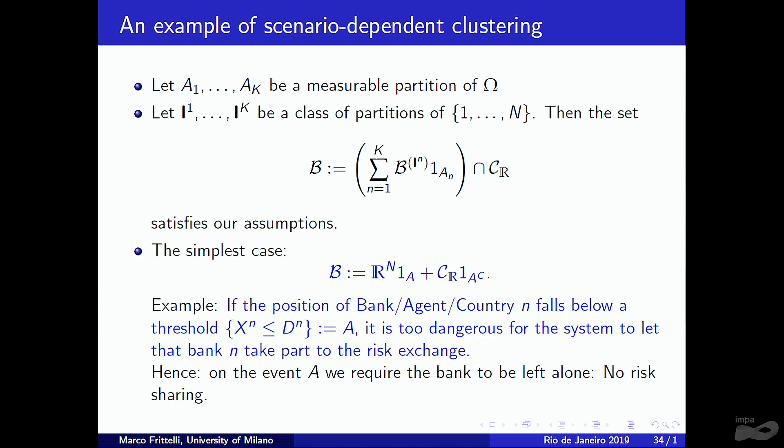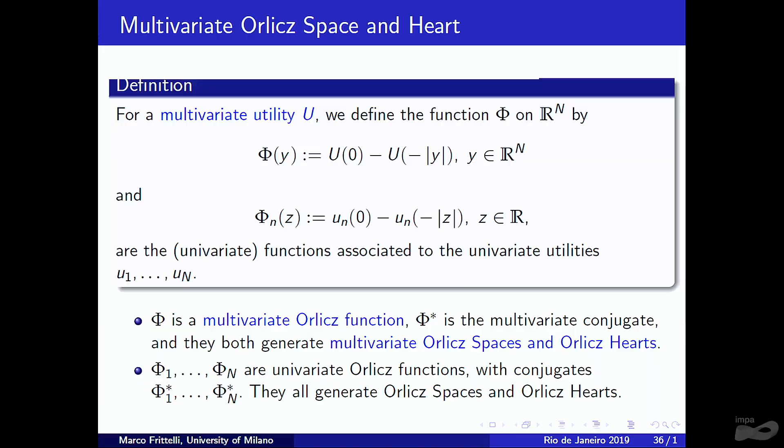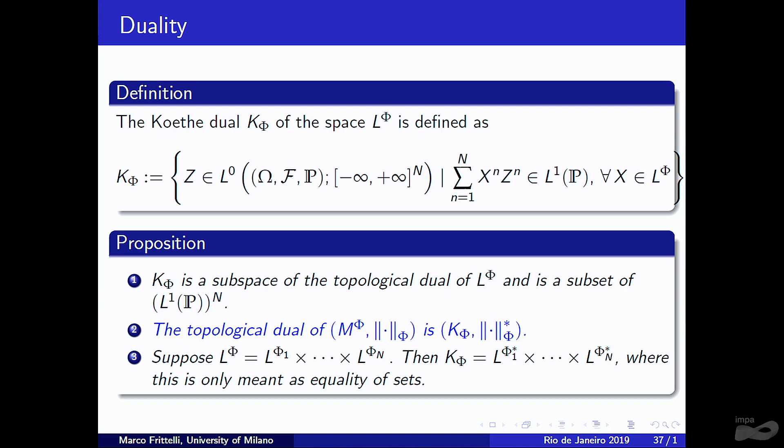This partition can also be made scenario-dependent. For example, let A be a set in Ω: on A, no risk sharing is allowed (only constants); on the complement of A, full risk sharing is allowed. The set A could represent the event that bank n is close to default, in which case that bank is excluded from the risk exchange mechanism as it is too risky for the system.